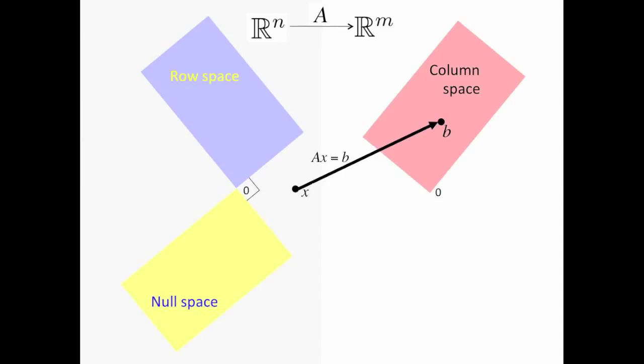The first theorem of this unit told us that the row space and the null space are orthogonal to each other. The second theorem told us that any vector x in R^n can be written as a vector in the row space of A plus a vector in the null space of A.